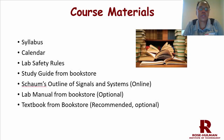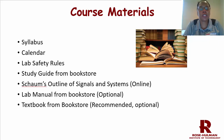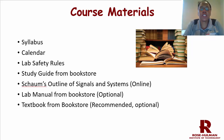Now let's discuss the course materials. Three of the course materials were emailed to you: the syllabus, the calendar, and the lab safety rules — all also available on the Moodle course website. You'll need to get some materials from the bookstore, including the study guide and the lab manual. Schaum's outline of signals and systems is available on the Access Engineering website online using your Rose-Hulman account. There is also an optional lab manual and textbook in the bookstore.